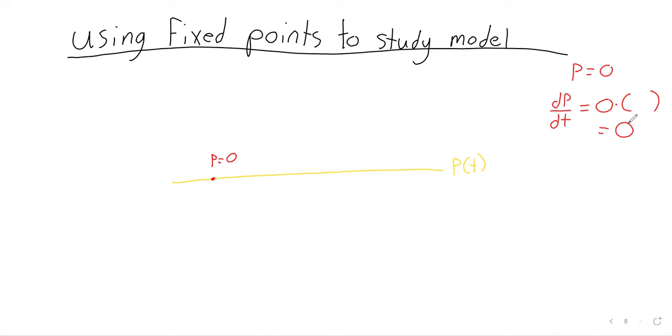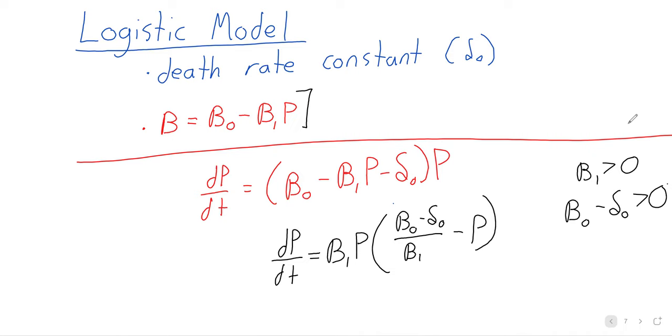And there is one other point where this occurs, and that's beta zero minus delta zero over beta one. And again, that's reflected in this differential equation. If this population and this constant were the same, then that subtraction would give you zero, and the rate of change of the population is zero. Zero times beta one times the population is always zero.